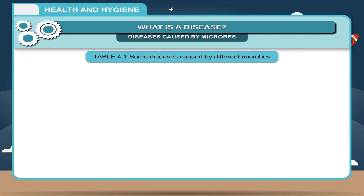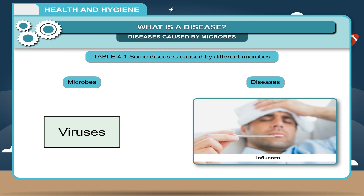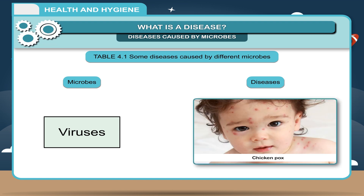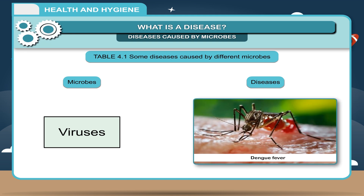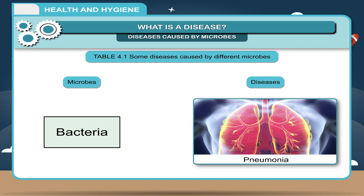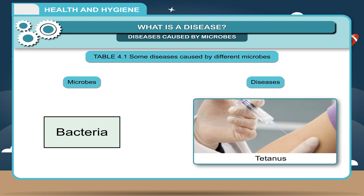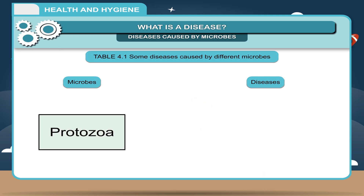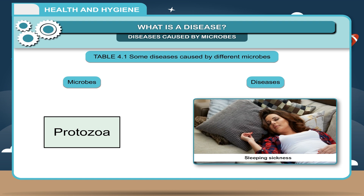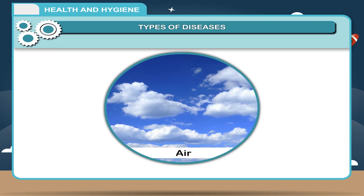Table 4.1 — Some diseases caused by different microbes. Viruses cause: common cold, influenza, mumps, hepatitis, chicken pox, measles, polio, viral fever, rabies, and dengue fever. Bacteria cause: pneumonia, tuberculosis, cholera, typhoid, leprosy, tetanus, and plague. Fungi cause: ringworm, athlete's foot, and itching. Protozoa cause: malaria, sleeping sickness, and dysentery.